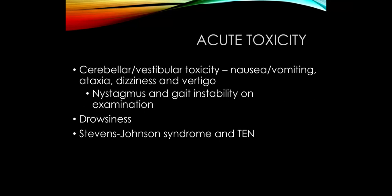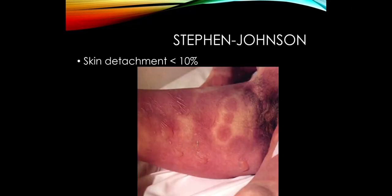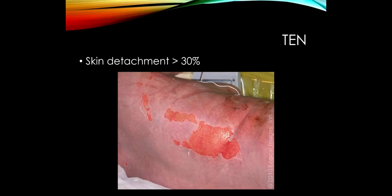Another potential side effect of phenytoin is Stevens-Johnson syndrome and toxic epidermal necrolysis (TEN). When skin detachment is less than 10%, we use the term Stevens-Johnson syndrome; if more than 30%, it's toxic epidermal necrolysis. This usually starts fairly early after beginning therapy. It's not very common, but it would be very serious, so you'd want to warn patients to report any skin changes right away. Loading patients with IV phenytoin or fosphenytoin can also trigger cardiac arrhythmias and hypotension.